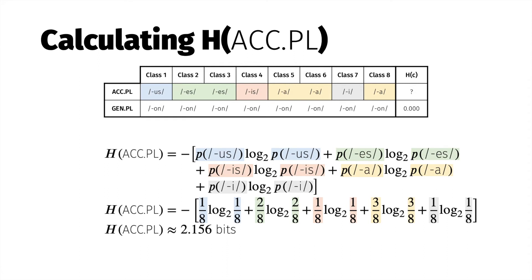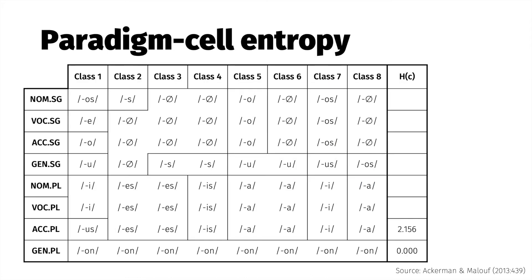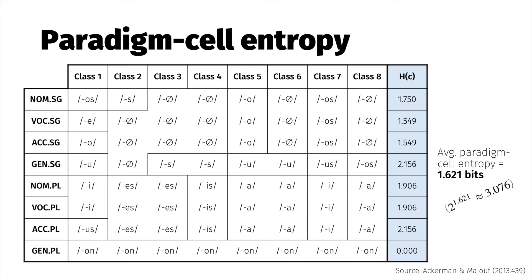Repeating this process for the other case-number values and calculating their mean gives 1.62 bits. In other words, predicting a random paradigm cell for a random Greek noun is about as difficult as choosing between 2^1.62, or around three, equally likely options.